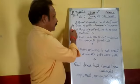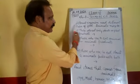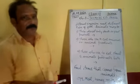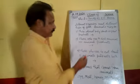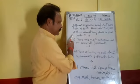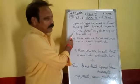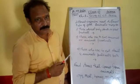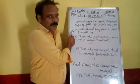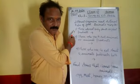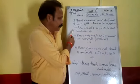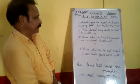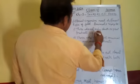First of all, different organisms need different types of food. Based on this, we can divide animals into categories. Animals may be, number one, those who eat only plants or plant products. What do we call them? We call them herbivores.